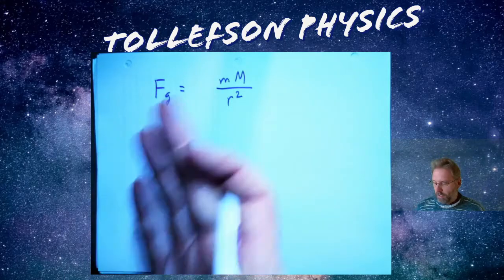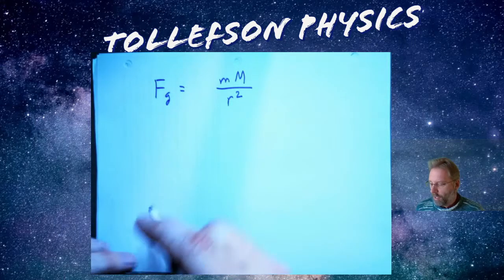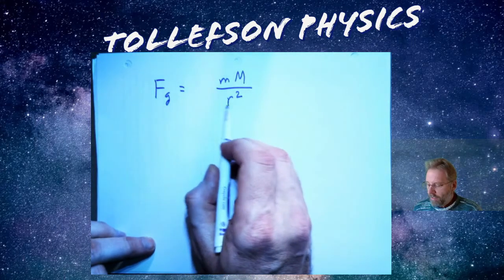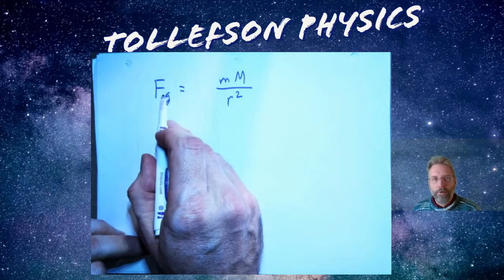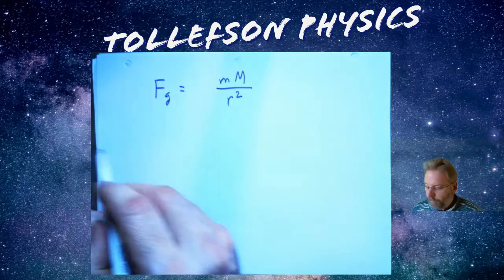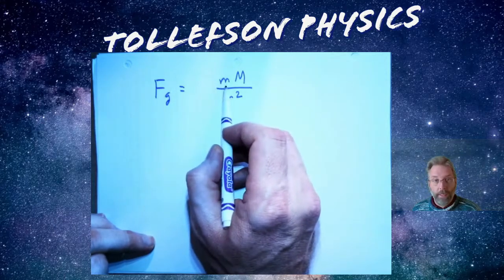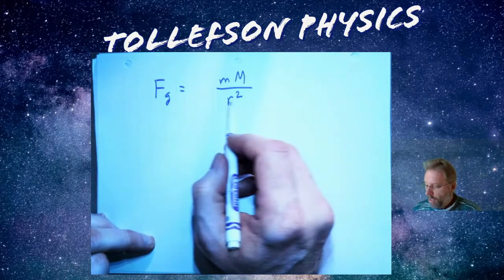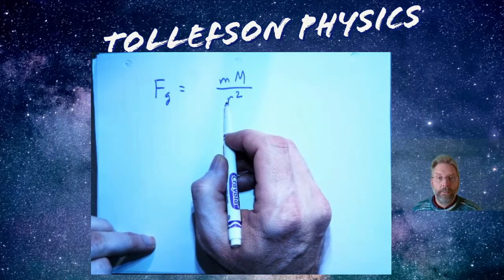This is known as an inverse square function because if I go twice as far apart, the force drops fourfold. Mass is in kilograms and using SI units, the distance is in meters.